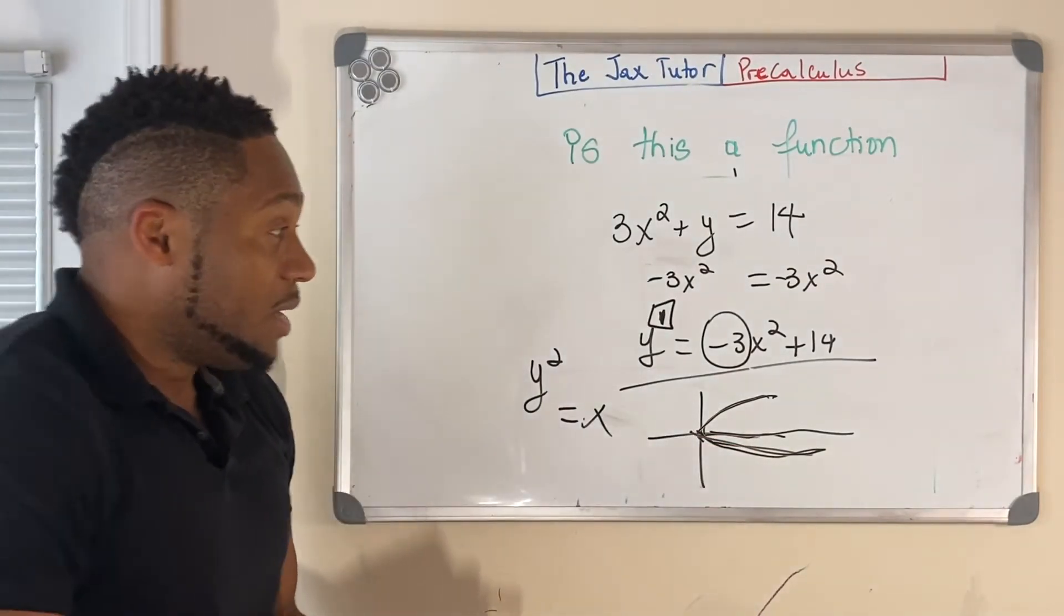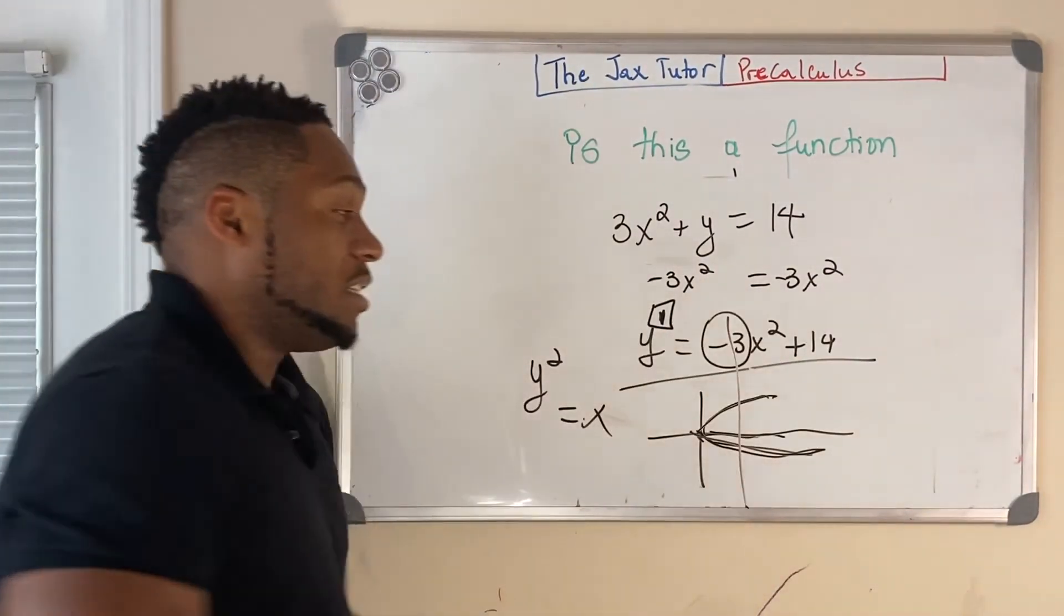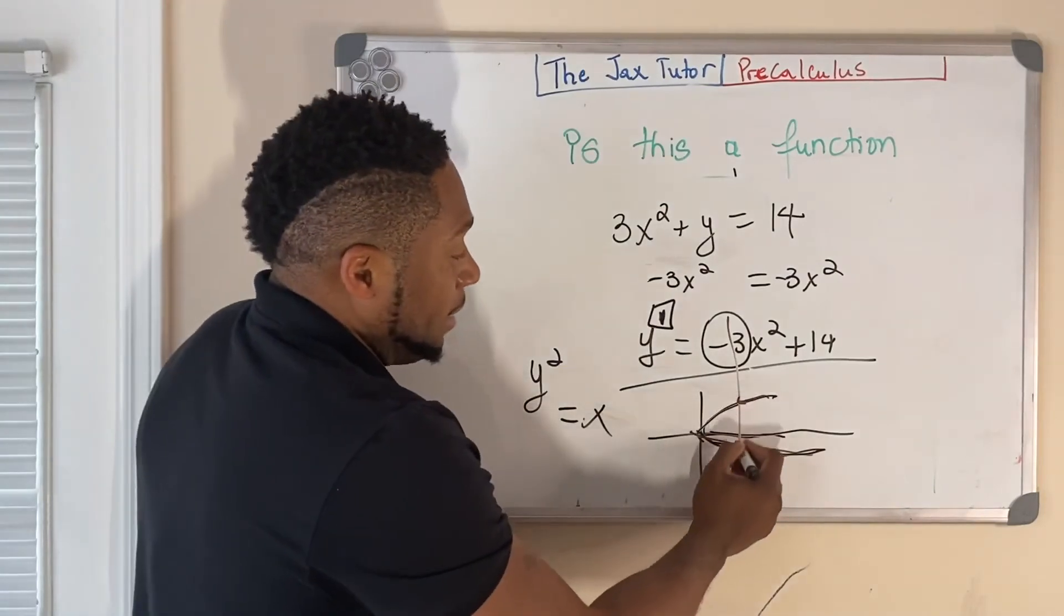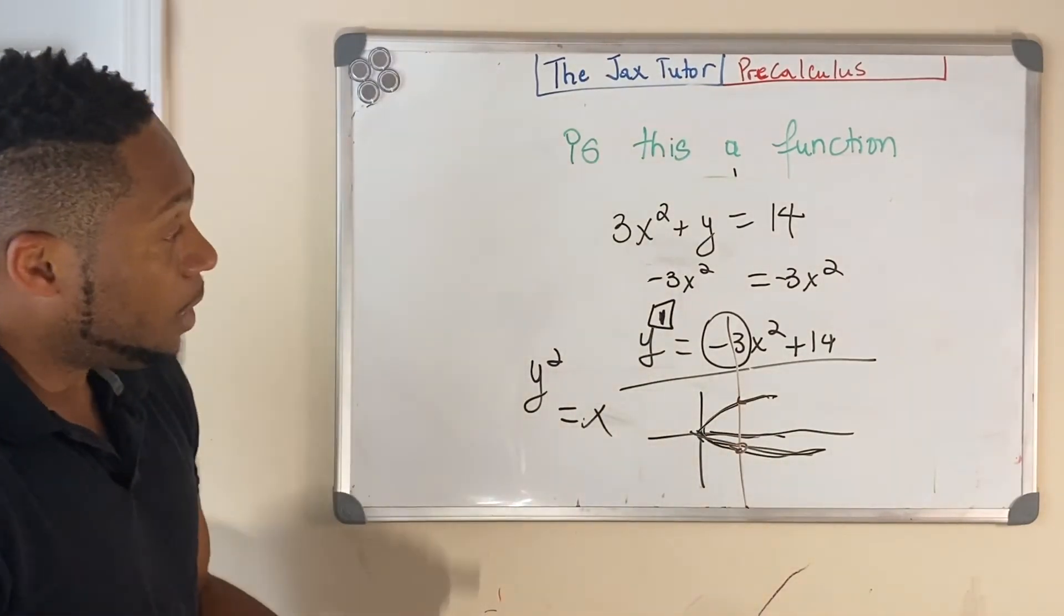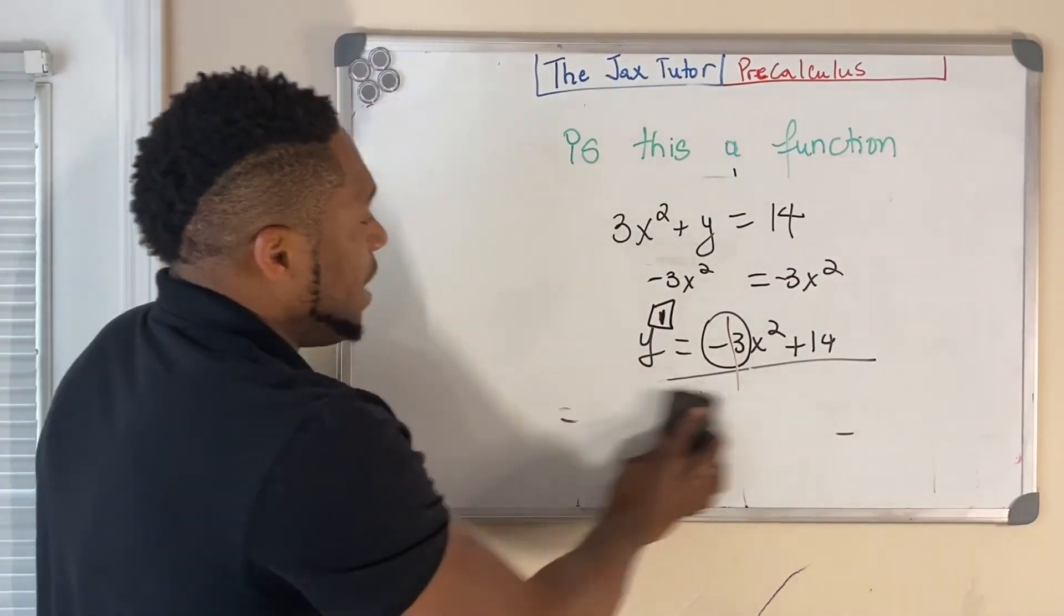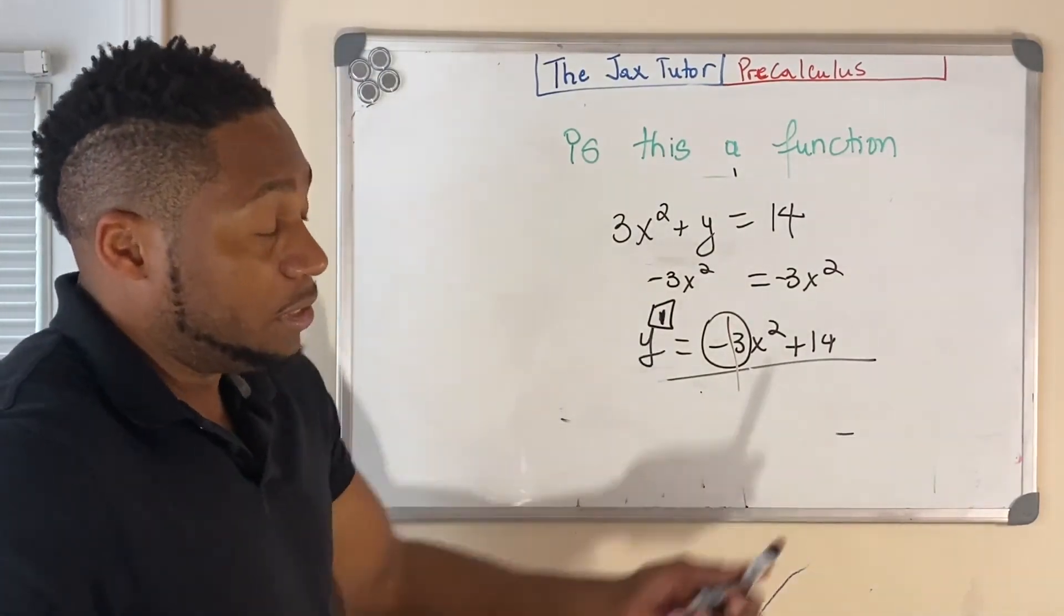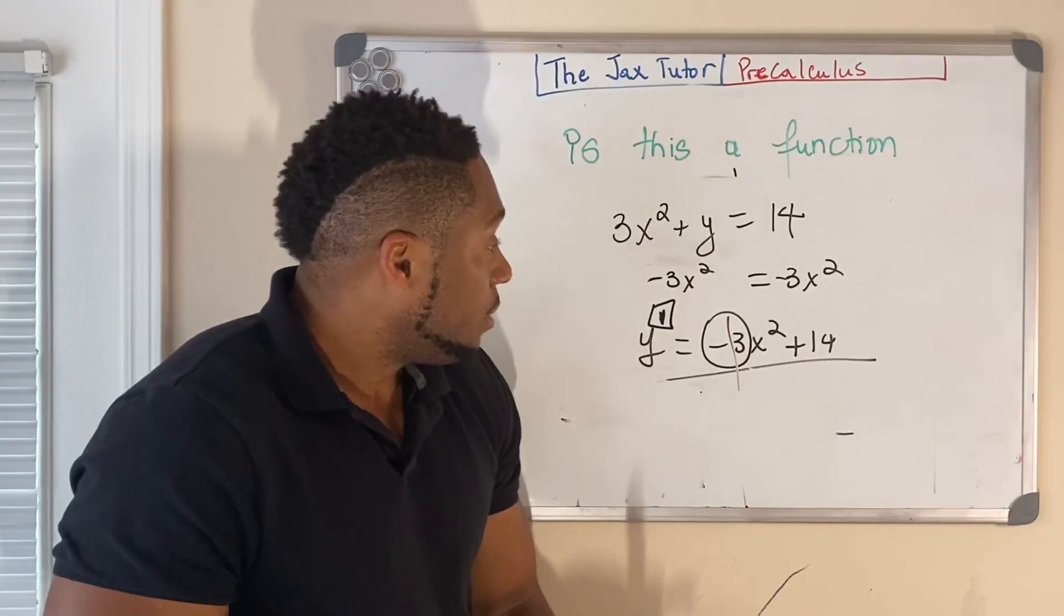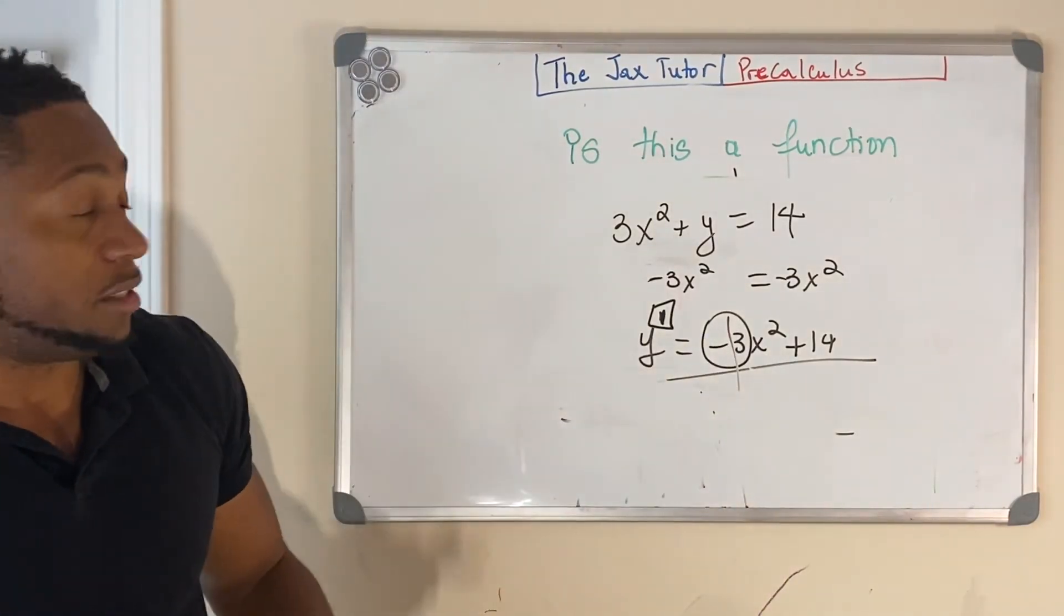Would that pass the vertical line test? No, because when you draw the vertical line here, it would intersect this here and here and also in here. But we know in this case, we have odd powers of y, of the output, so that means this is the function. It's actually a quadratic function.